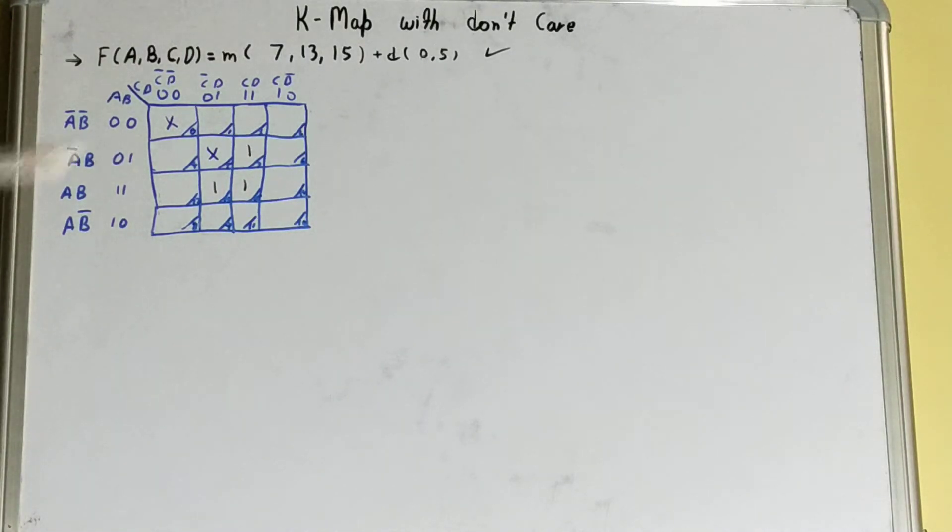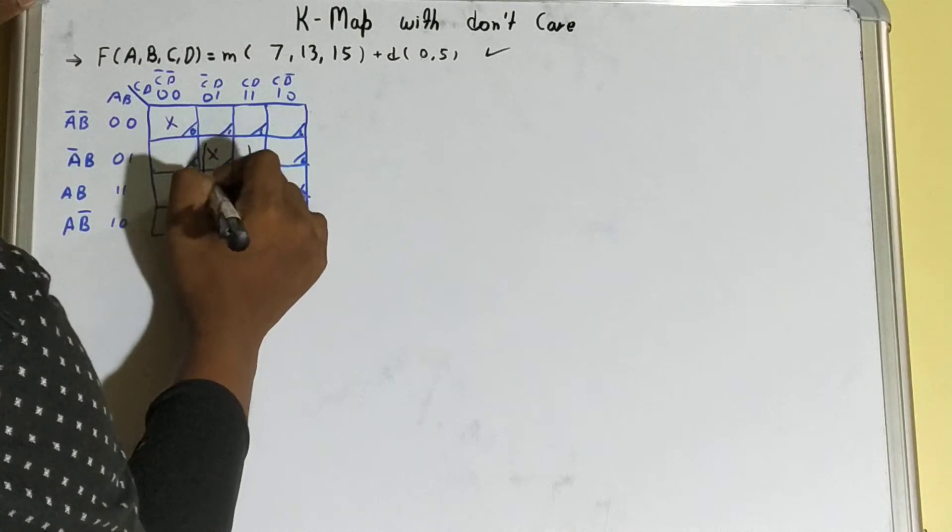Now what happens is we will try to utilize this don't care condition also for forming our combinations. So before, you saw only pairs were possible. Now if we see, a quad is possible clearly, right? So we'll form this quad.